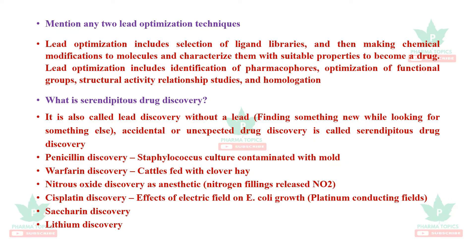Examples of serendipitous drug discovery: Penicillin was discovered by Sir Alexander Fleming — he had a Staphylococcus culture that got contaminated in the lab and showed a zone of inhibition from a mold, from which he isolated and named penicillin. Warfarin was discovered when cattle fed on clover hay developed bleeding problems, and the responsible molecule was identified as warfarin.